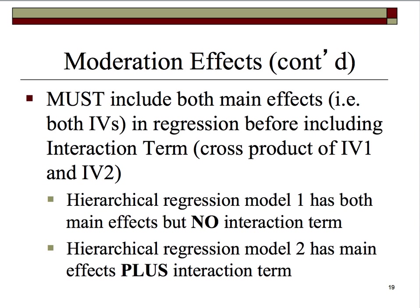You must include both main effects in regression before including the interaction term. That interaction term is simply the cross-product of IV1 and IV2. So in a hierarchical regression, model one has both main effects but no interaction term. Then in model two, you enter in the interaction term, and the output shows you a model with the main effect IVs and their cross-product.